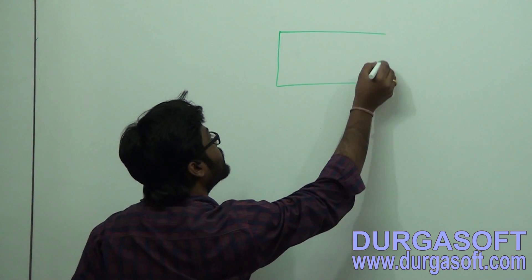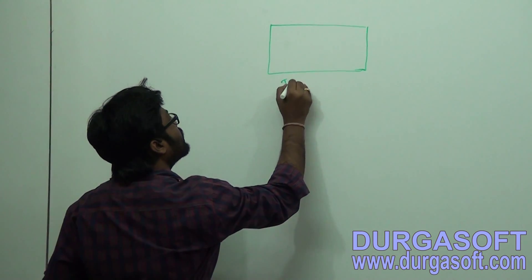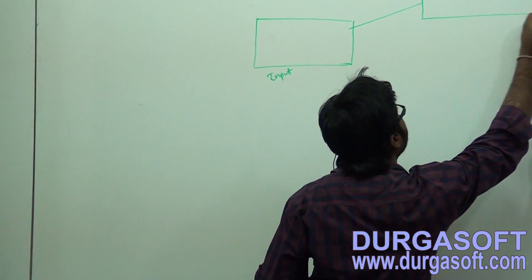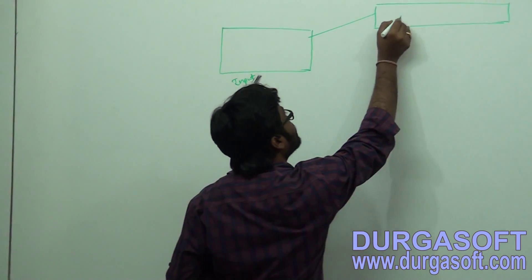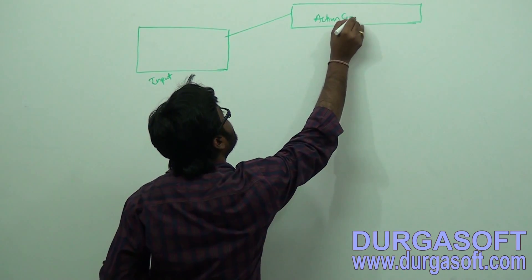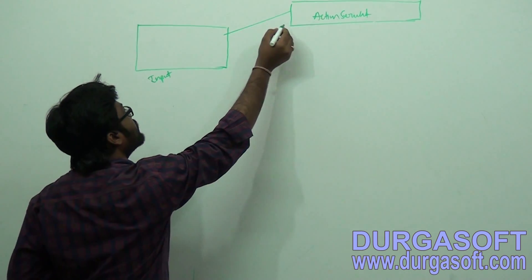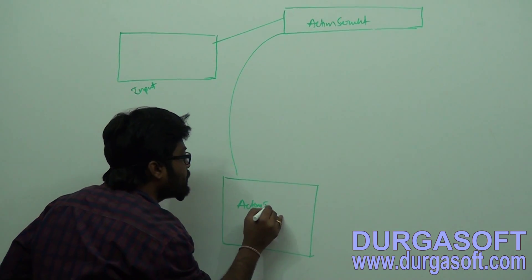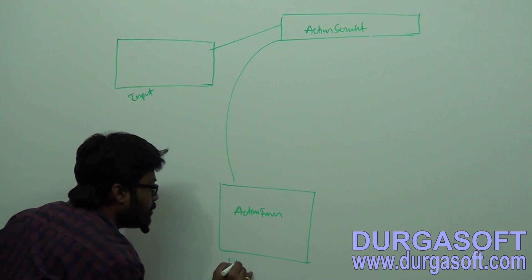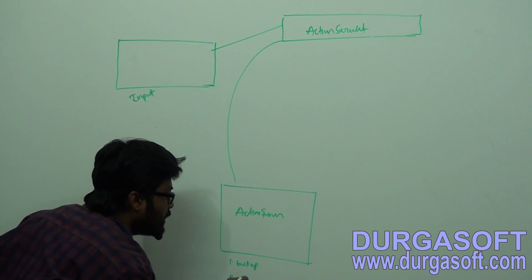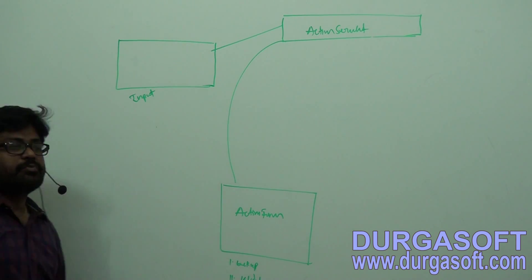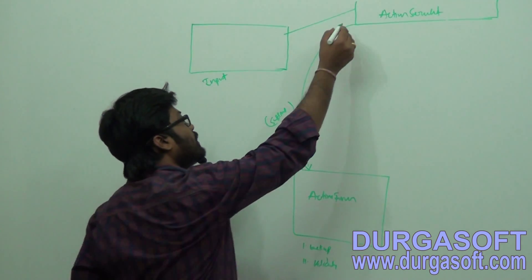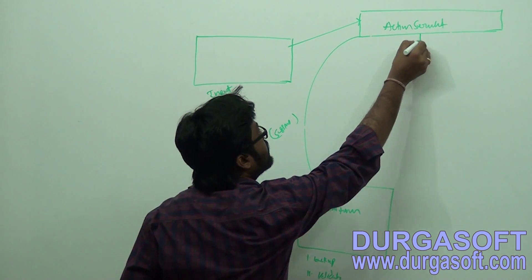So once again, simple brief architecture — just recall it. In case of Struts, if you submit any input form, the first request always goes to ActionServlet. ActionServlet, for this form, will create one ActionForm class object. ActionForm class is used for validations and form backup support. This bean class object it will create and store into session scope.